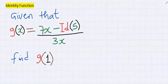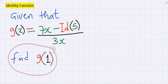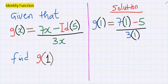Consider this question: given that g(x) = 7x - id(5) / 3x, find g(1). g of 1 will become, in the place of x I'm going to have 1. This means any place I see x I'm going to put 1.